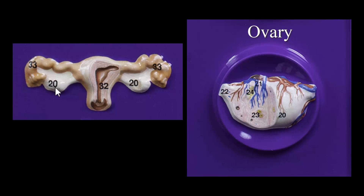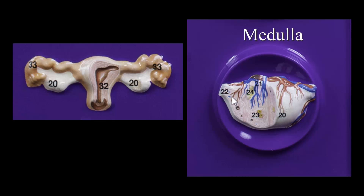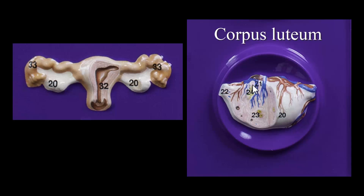Next we get to the ovaries. As you can see here, this would be the uterus, fallopian tubes — also called uterine tubes — and then the ovaries. We're going to have the blood vessels going to the ovary. Number 22 is referring to all the stuff in the middle here, which is the medulla or inner portion of the ovary. Within that medulla we're going to find some developing follicles. These follicles are going to mature into eggs, and as they do that they're going to produce hormones. Number 24 here is the corpus luteum, which also produces a hormone that we'll talk about in lecture.